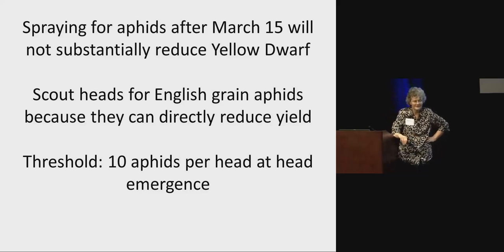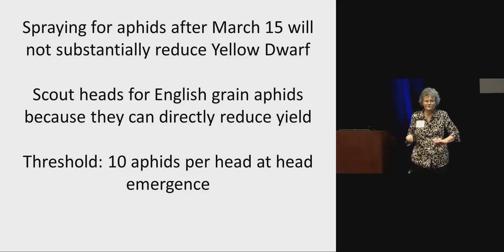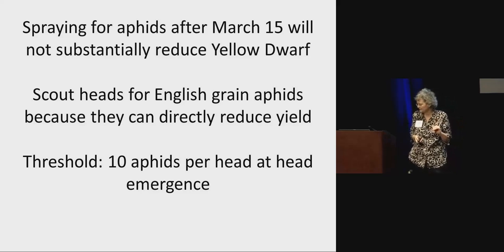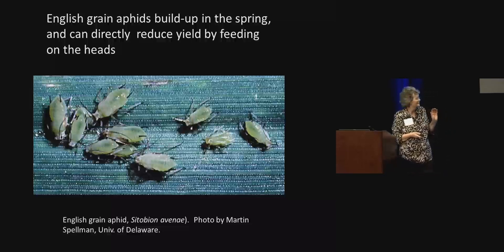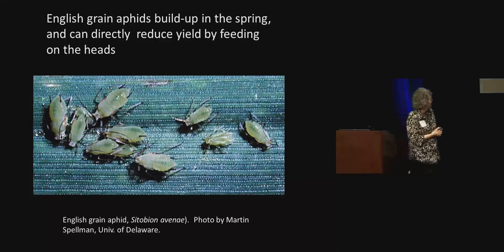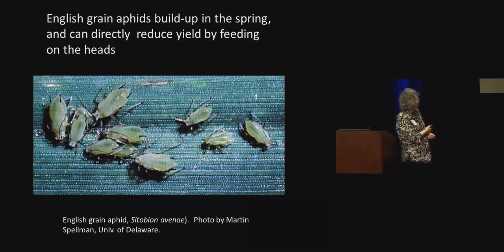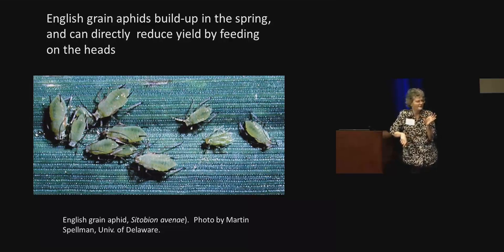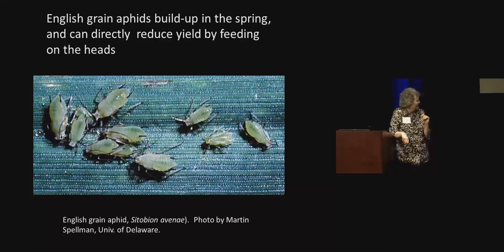Spraying for aphids after March 15th is not going to substantially reduce your yellow dwarf. The only time where spraying for aphids later on might make sense is if you scout and see a lot of the English grain aphid — 10 aphids or more per head when those heads are emerging. It's a big aphid with black cornicles and black antennae, clustered along the heads. If you find a bunch of aphids on the heads at head emergence, that would be the only time I would recommend spraying for aphids after mid-March, because these things can do direct damage to the wheat by their feeding.